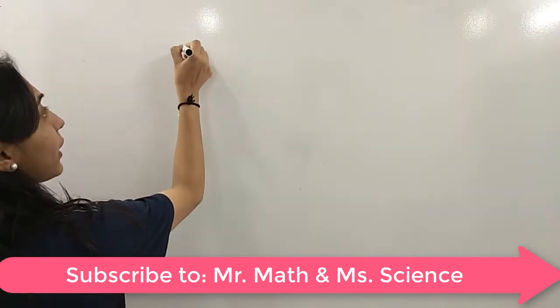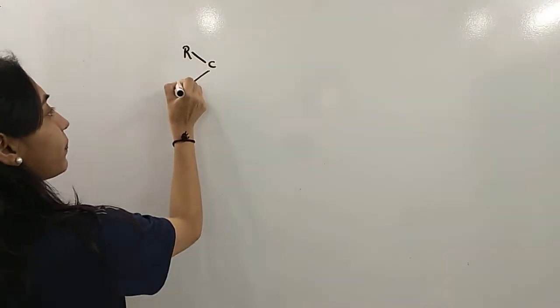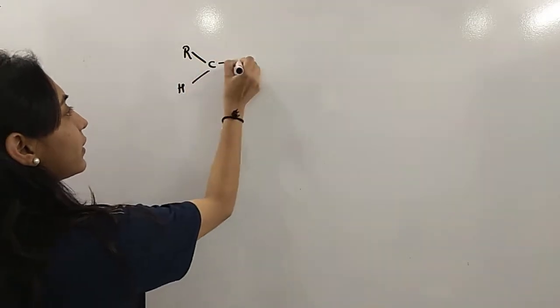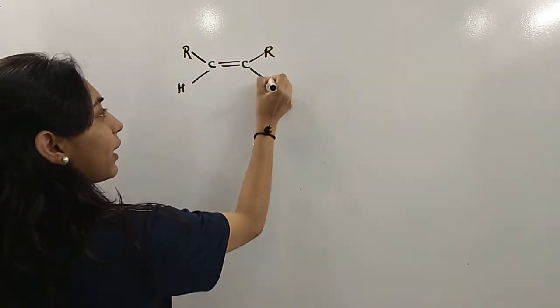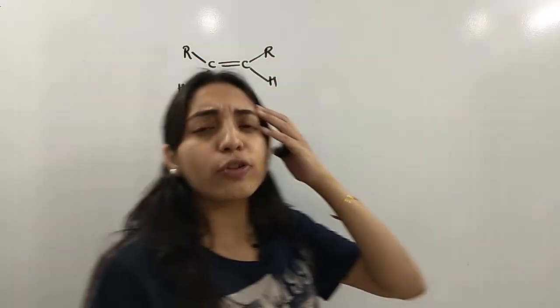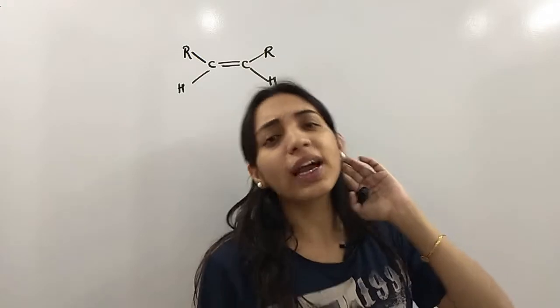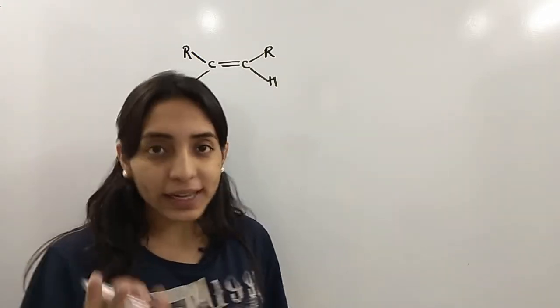Imagine I have a particular alkene. If I have two R groups on one side, then I will call it cis. If both R groups are on opposite sides, then I will call it trans.